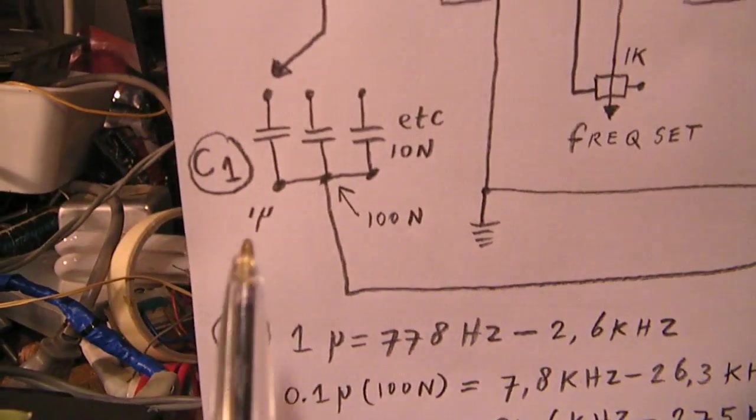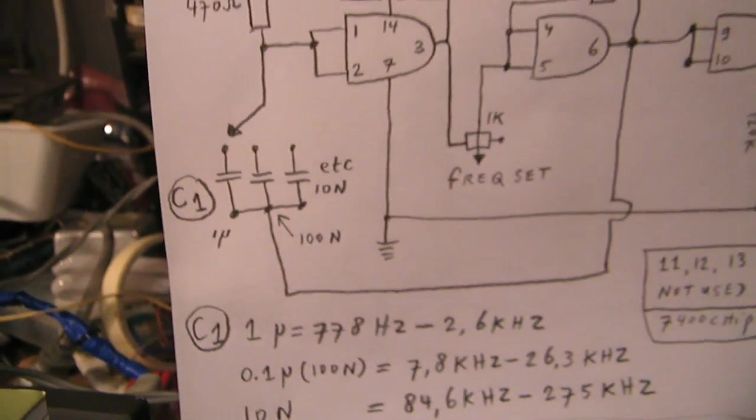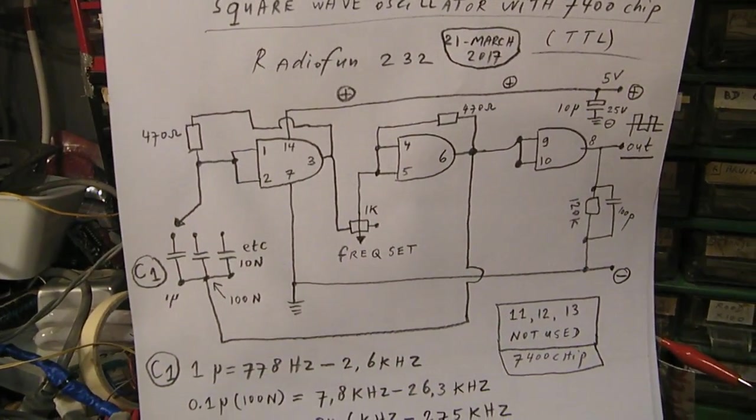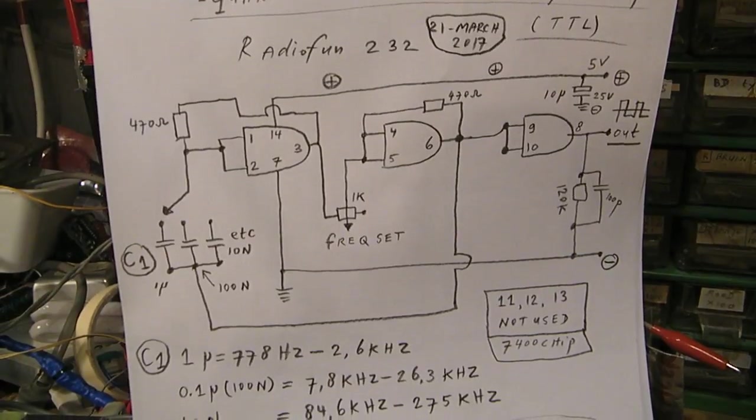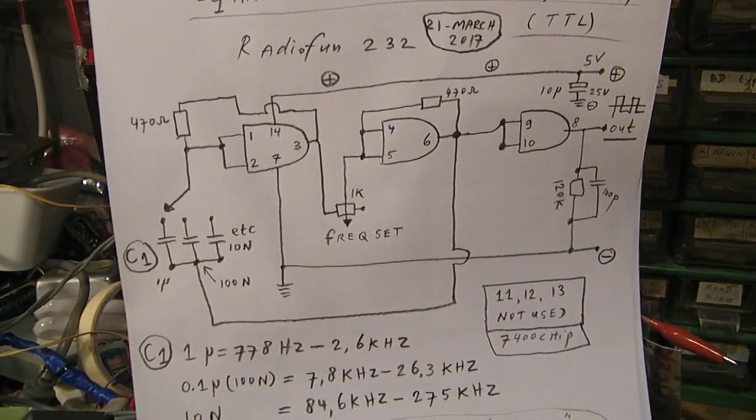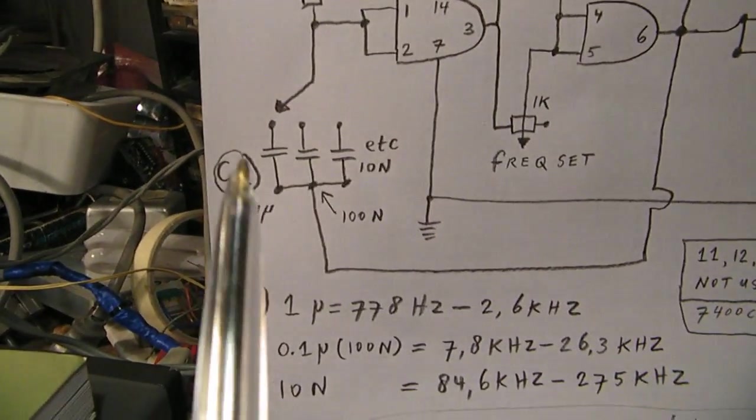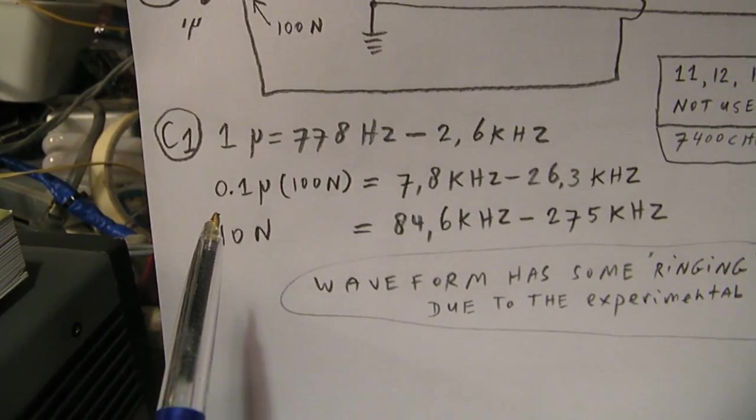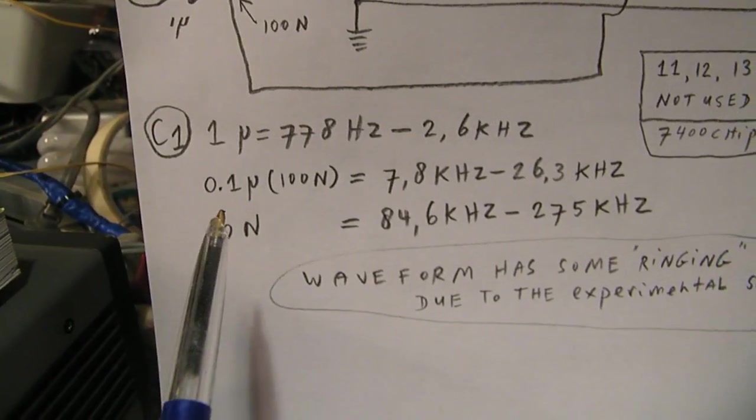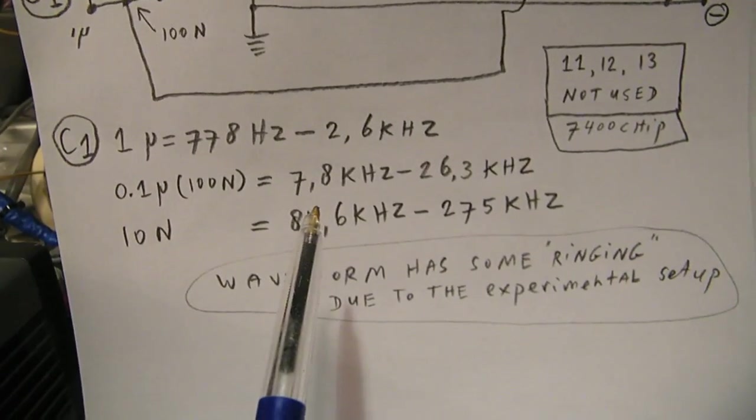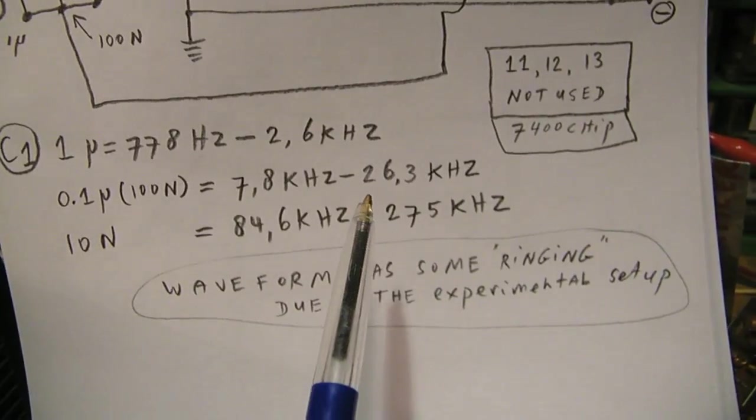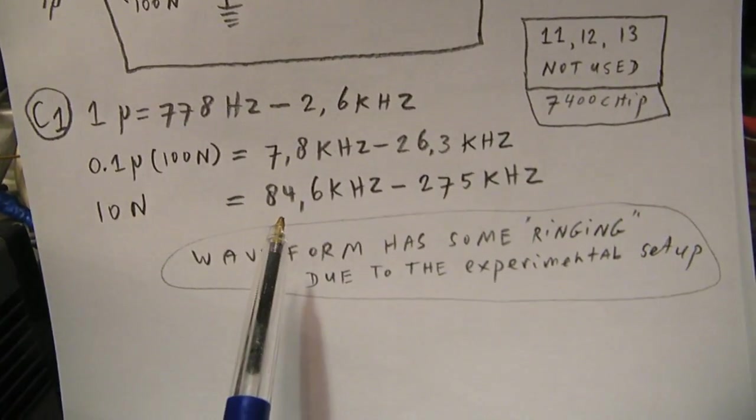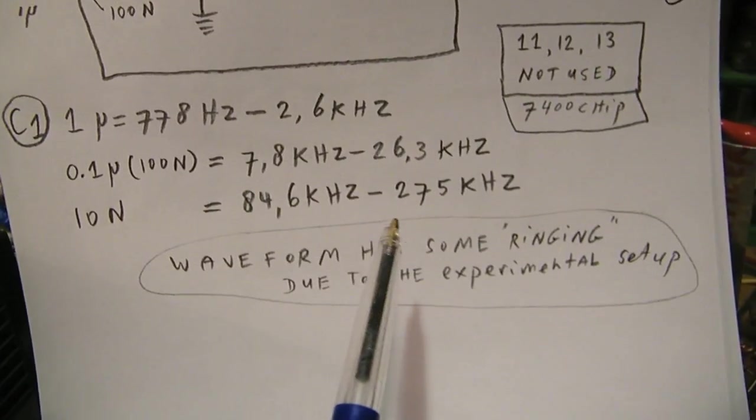When you use here a capacitor from one microfarad, you have this frequency band. One tenth of that, 0.1 microfarad, gives this band: 7.8 kilohertz up to 26.3 kilohertz. And 10 nanofarad gives this frequency band, quite high.